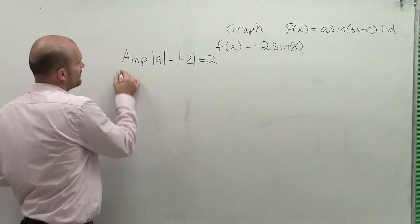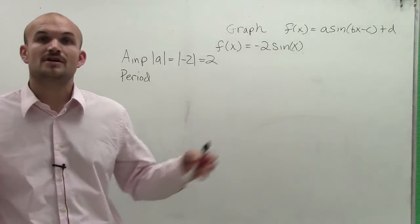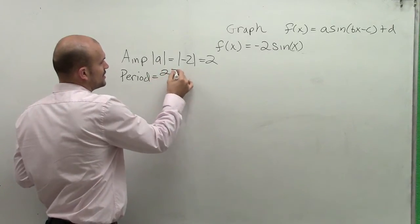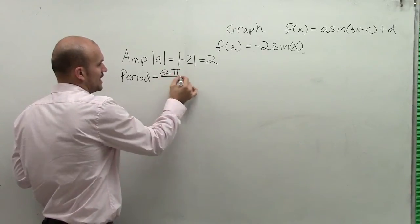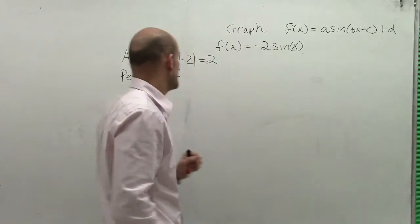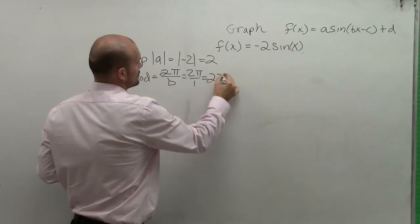The next thing I want to figure out is the period. Now remember, the period is the distance that it took for our graph to complete one cycle. So to find period, what you do is you take your original period from your parent graph, 2π, and divide it by b. Well, remember, b is going to be your coefficient of x. In this case, we have 2π over 1, which equals 2π.